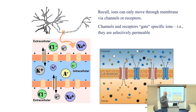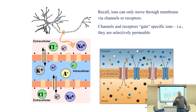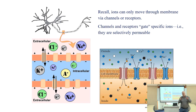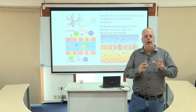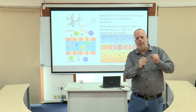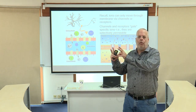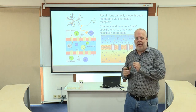Molecules cannot move back and forth directly across the membrane — they always have to depend upon these channels and receptors, which are specific for specific types of ions. We call this selective permeability. One channel may admit sodium, whereas another channel will only admit potassium.